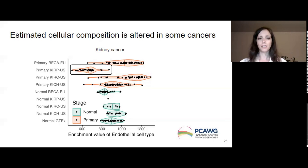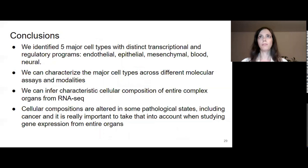So in conclusion, we identified five major cell types with distinct transcriptional and regulatory programs, namely endothelial, epithelial, mesenchymal, blood, and neural. We can characterize the major cell types across different molecular assays and modalities. We can infer characteristic cellular composition of entire complex organs from RNA-seq, and the cellular compositions are altered in some pathological states, including cancer, and it is really important to take that into account when studying gene expression from entire organs.